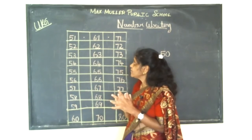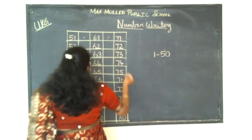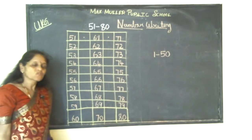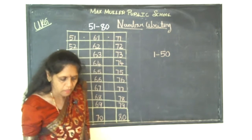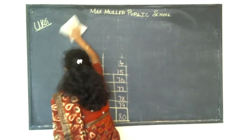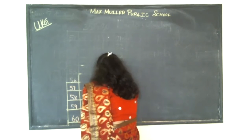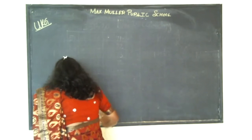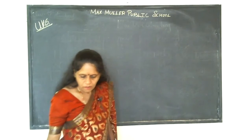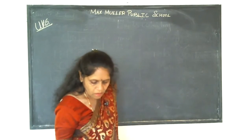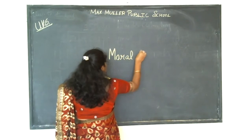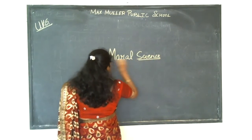Children, today you learned number writing from 51 to 80. In the next class we learn much more. Next you are going to learn oral — that is moral science. I am teaching you moral science. Today, I am going to ask you the question, children. You should be able to answer moral science.